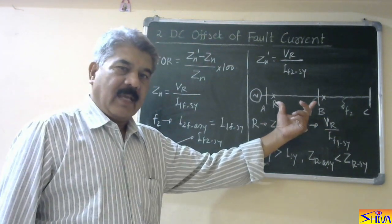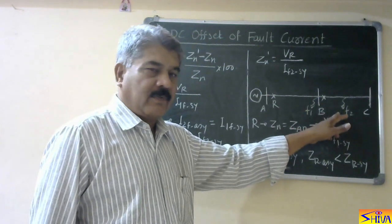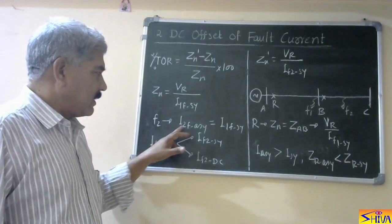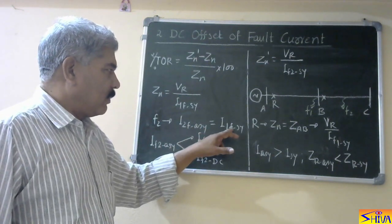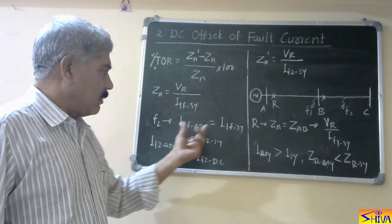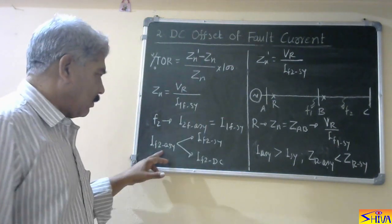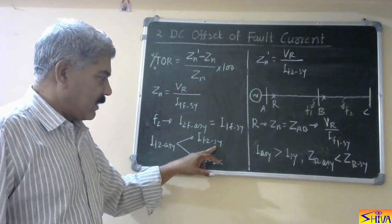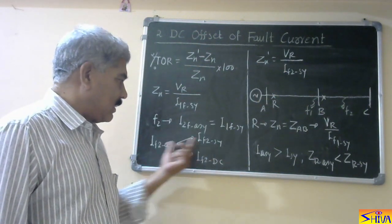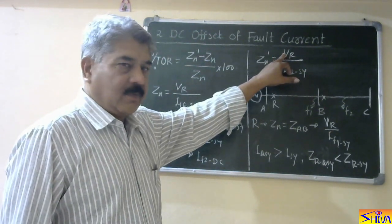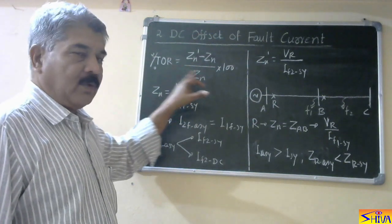This relay is protecting line section AB. Now if F2 is in section BC, in normal conditions this relay should not operate for fault F2. But F2 has an asymmetrical fault current — symmetrical component plus DC offset — and it equals the fault current at F1 with symmetrical component only. Therefore the relay operates, and we compute the transient overreach. For this, the asymmetrical fault current at F2 has two components: symmetrical component and DC component. ZN_dash is computed from the symmetrical component of the fault current at F2, and using ZN_dash and ZN we compute the percentage transient overreach.